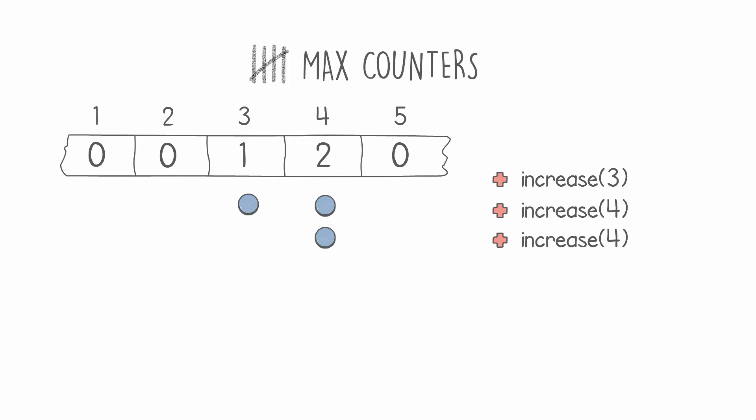The next instruction is a max counter instruction. What we do in this instruction is reset all the counter values to be the value of our maximum counter. In this case, our maximum counter is 2, represented by counter 4. So we go to every counter and reset it to the value of 2.